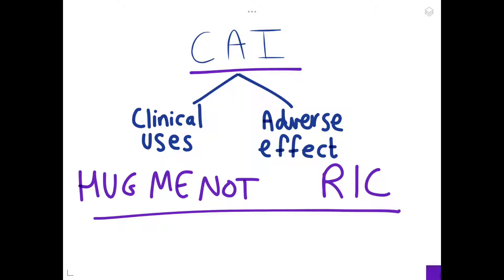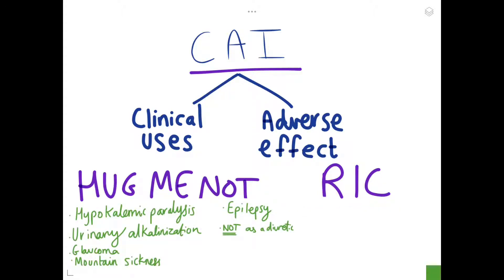Now I will go over through what HUG ME NOT stands for. So the clinical uses: H stands for hypokalemic paralysis, U stands for urinary alkalinization, G stands for glaucoma, M for mountain sickness, E for epilepsy, and it is NOT used as a diuretic. By that I mean it's not really used as much as compared to other drugs.